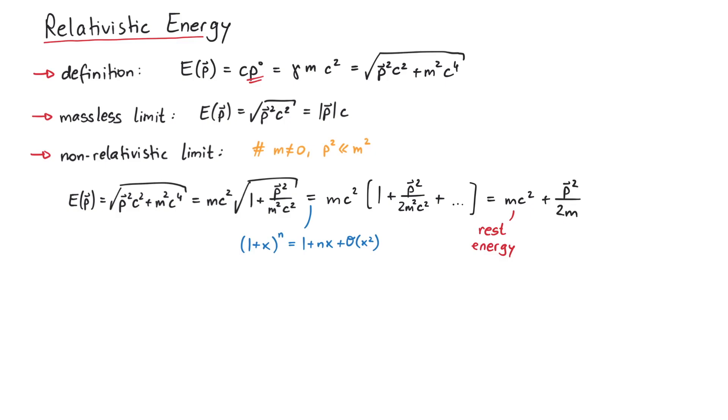Therefore, we can write the energy as mc2, the rest energy, plus p2 over 2m, the classic kinetic energy, plus further relativistic corrections. For instance, the first correction is minus p to the power of 4 over 8m3 c2.